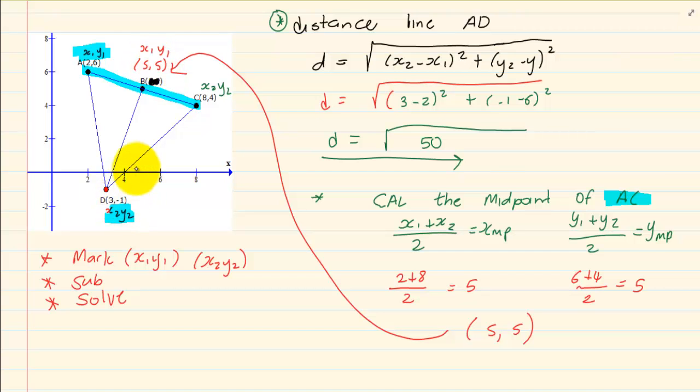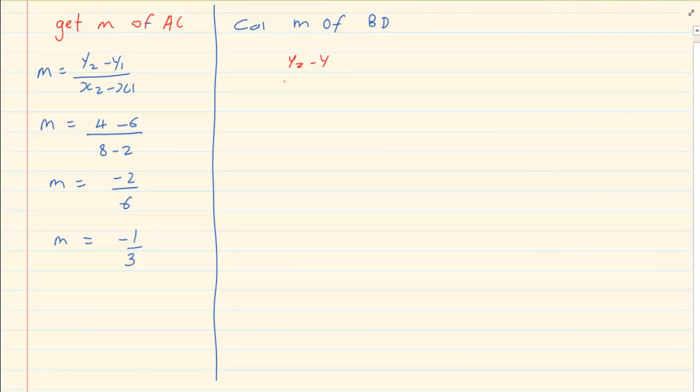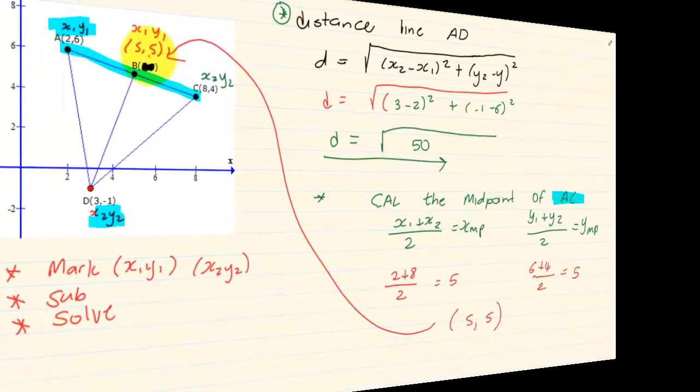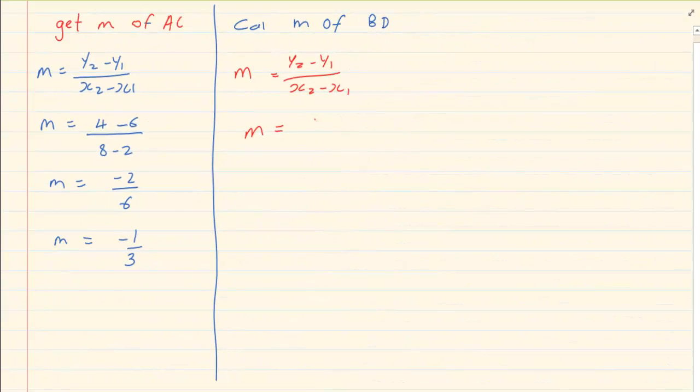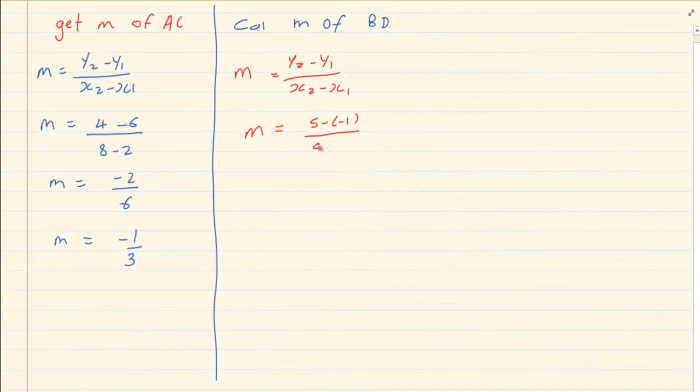It will be 5 minus minus 1. We know it's y2 minus y1 over x2 minus x1. So we have 5 minus minus 1 over 5 minus 3. So our m is equal to 6 over 2 which is equal to 3.